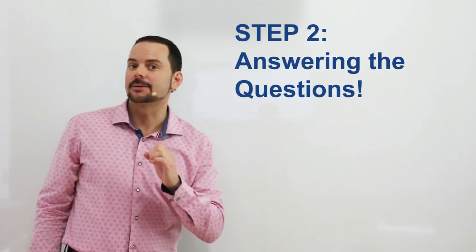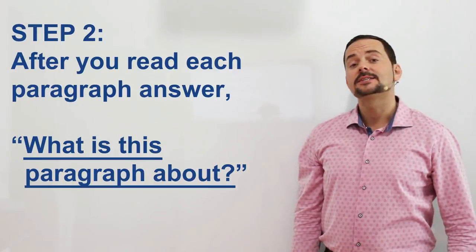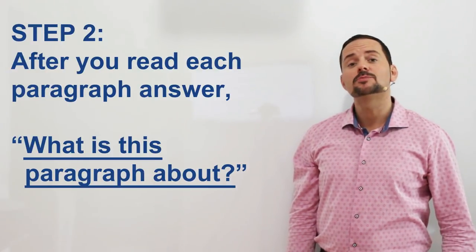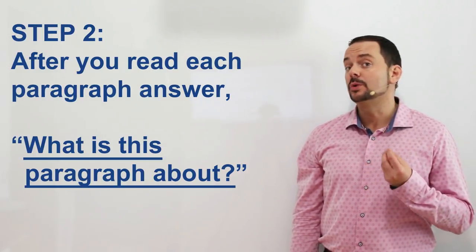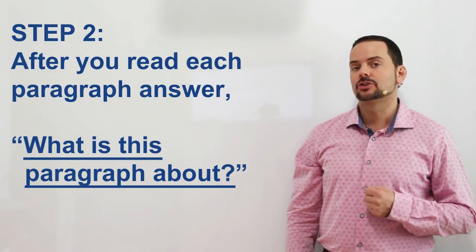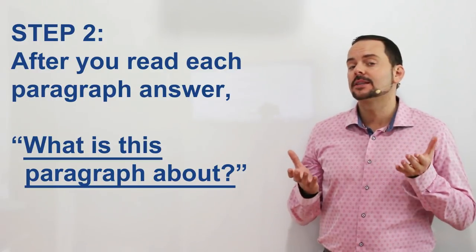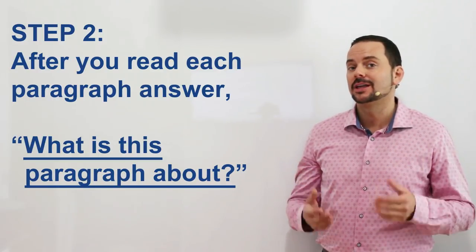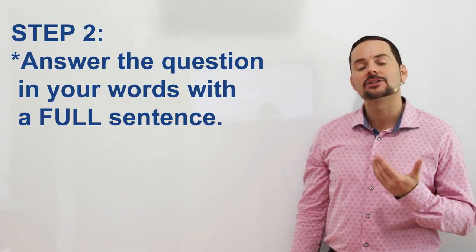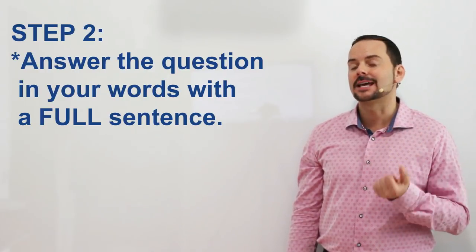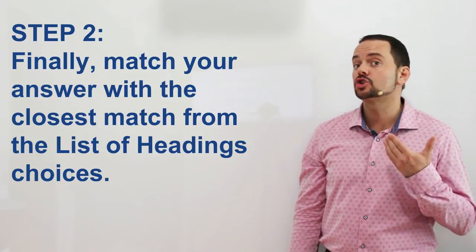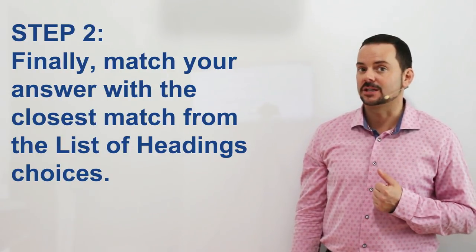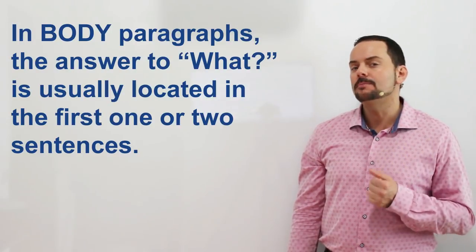Now let's go to step two. The next step is to read each paragraph carefully. After you finish reading a paragraph, ask yourself: what is this paragraph about? Then answer in a full sentence. Next, match your answer with the closest choice from the list of headings.